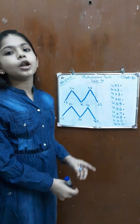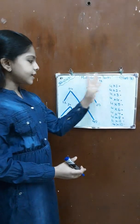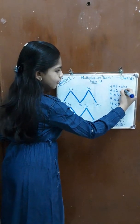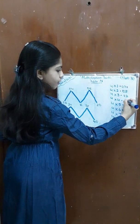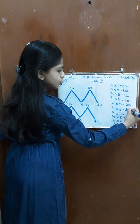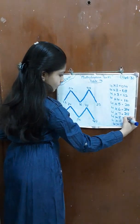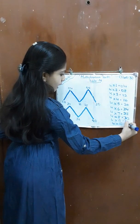There we go, we got the table of 4. Now let's take all these numbers in order and write it over here. That means 4, 8, 12, 16, 20, 24, 28, 32, 36 and 40.